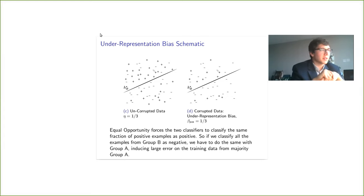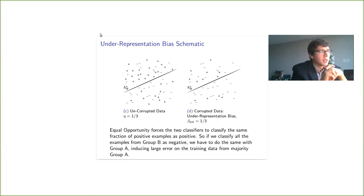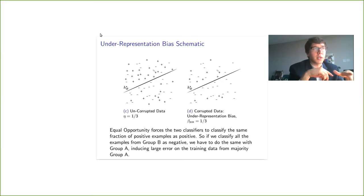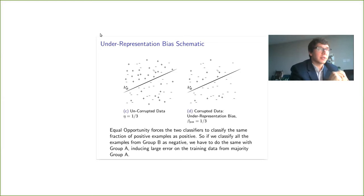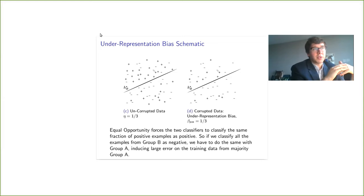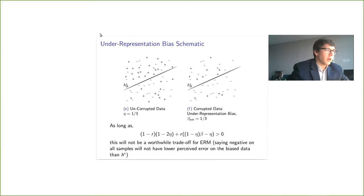Here's underrepresentation bias, and now we're going to talk about how the fairness constraints interact with different bias models. Equal opportunity behaves well — great, in fact — in the underrepresentation bias model. The reason is that equal opportunity requires the same fraction of positive examples from both groups to be labeled as positive. So if the data is sufficiently biased and plain ERM wants to say negative on all of group B, it would have to do the exact same with group A. But that would induce a lot of training error on group A, so it would not be the right decision for ERM, as long as this requirement holds.